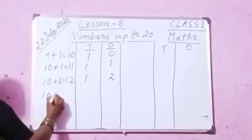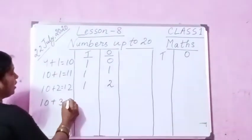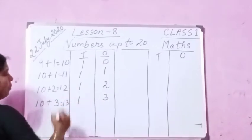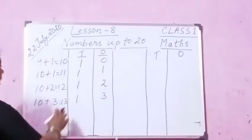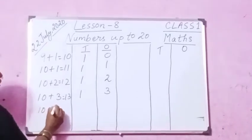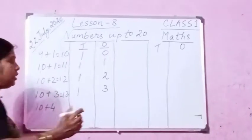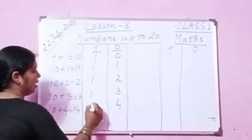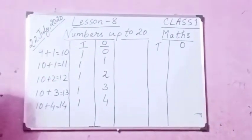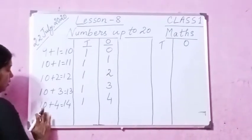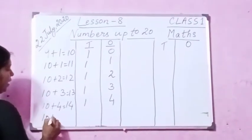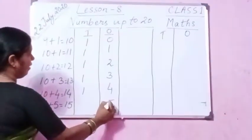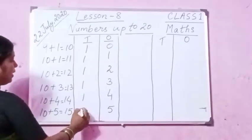13 — 10 plus 3 is 13. In 13 how many ones are there? 3 ones and 1 ten, please keep in mind. 10 plus 4 is 14. 10 and 4 more is 14. So in 14 you have 4 ones and 1 ten. Children, you have to write it this way. 10 plus 5 is 15. You see here — in the ones place we have 5 and in the tens place we have 1.